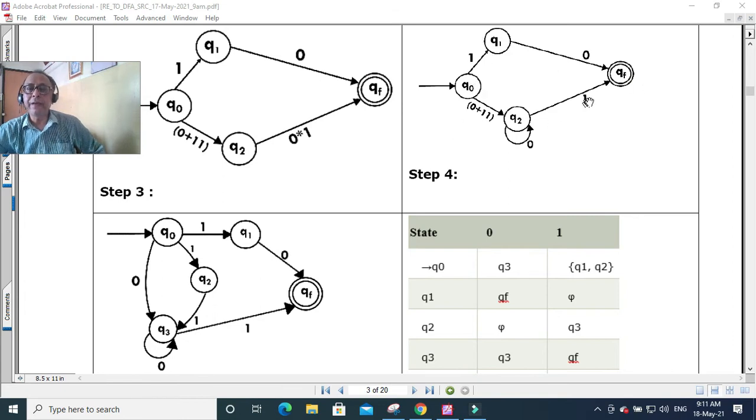Now this we have to make it a non-deterministic DFA. So what we have done, because of 0 + 11, there is one path 0 and another path 11, so this is 0 + 11. So you remember this q2 and this q2 are two different states. We put q2 a new state here, so this 0 + 11 means 0 here and 1 to a different q2. This q2 and this q2 not same. 11, so 0 + 11 we take care of it, there is 0 here.